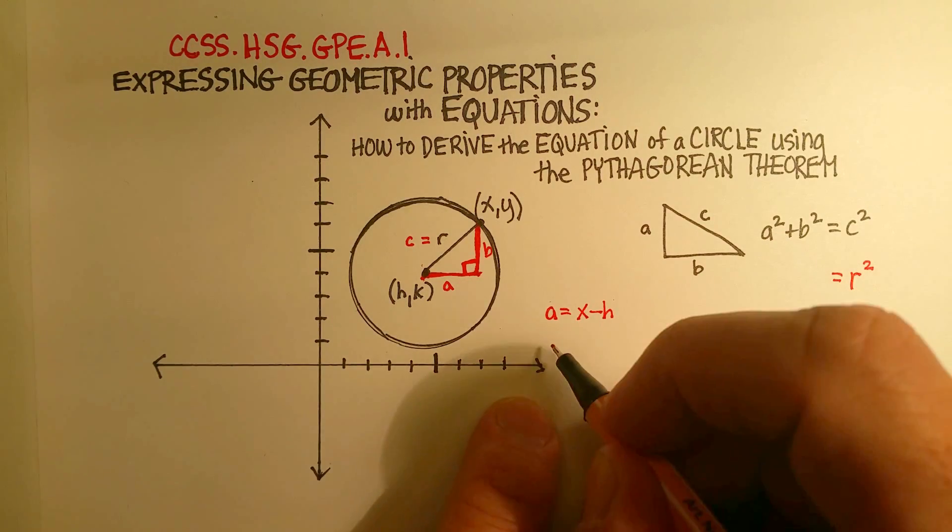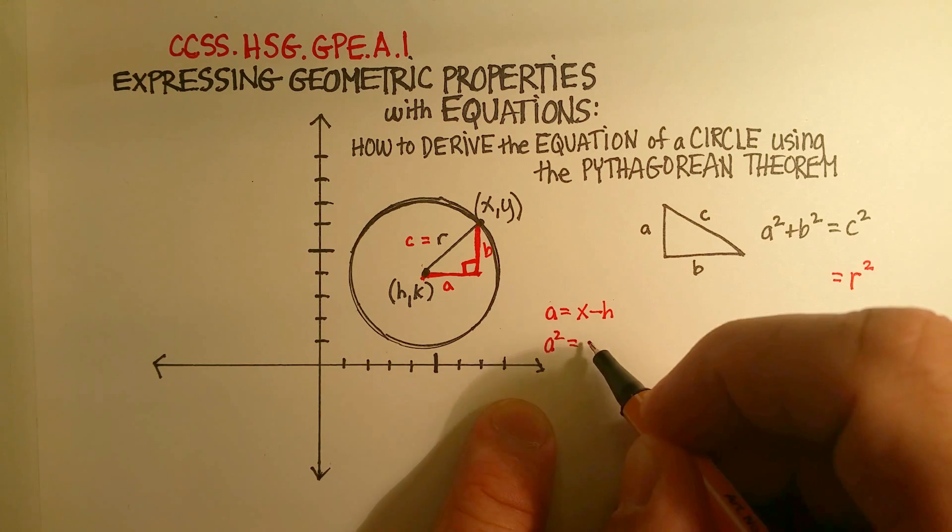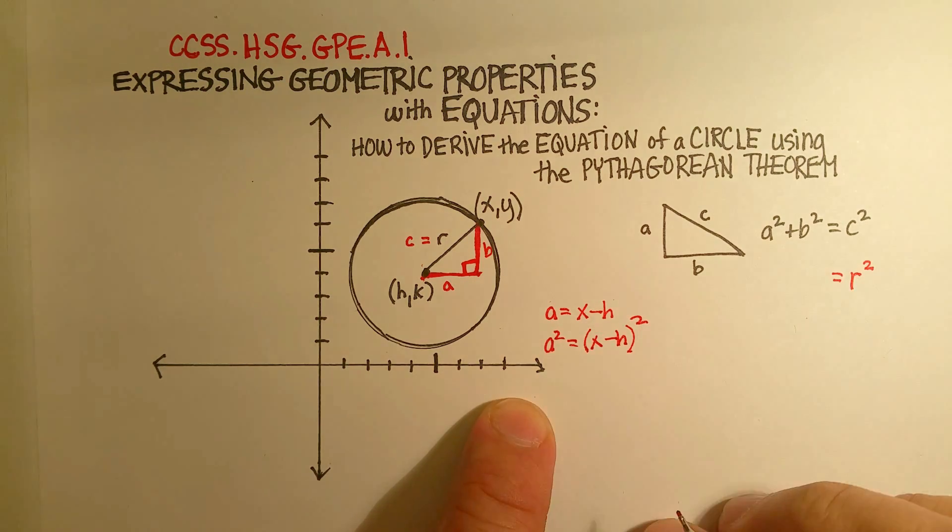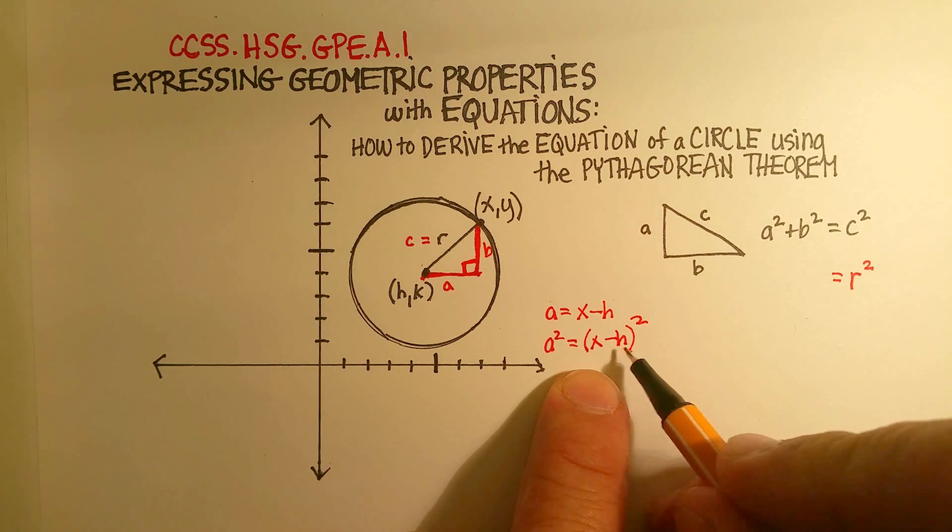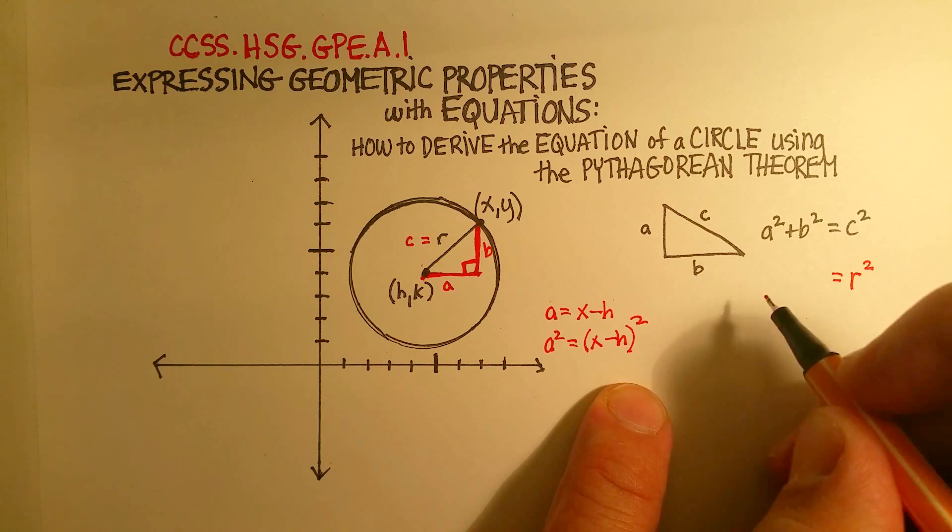Now, if we're going to square that, we square x minus h. So we've got a value for a²: (x - h)².